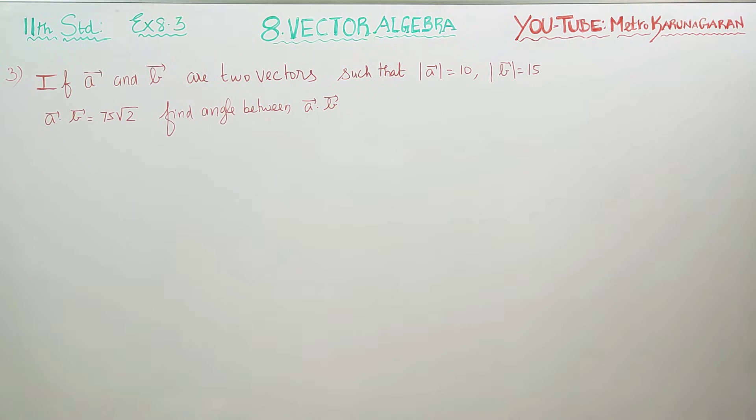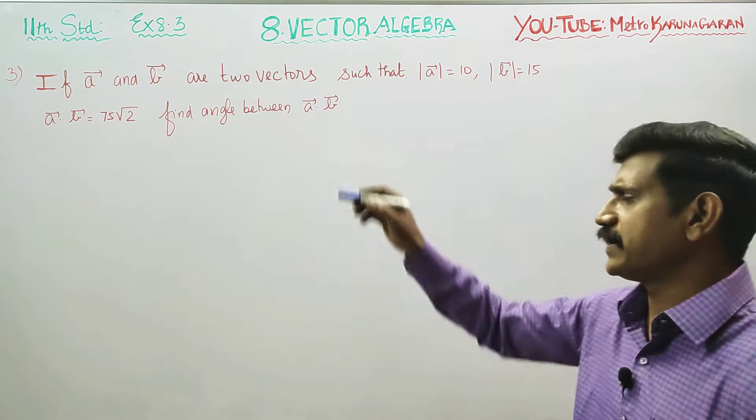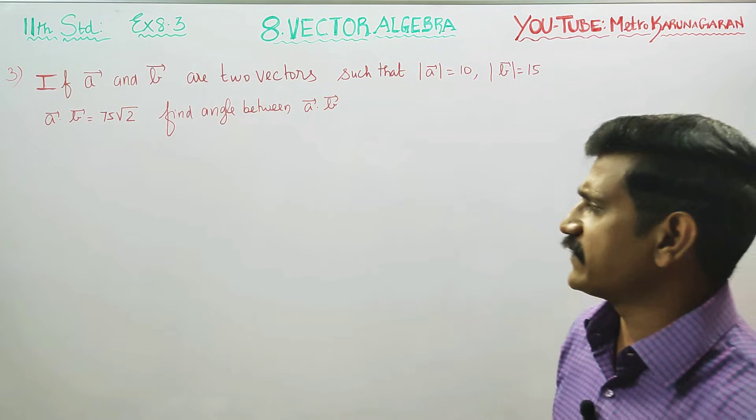Dear Learn Standard students, in exercise 8.3, problem number 3: If A vector and B vector are two vectors such that the magnitude of A vector equals 10, magnitude of B vector equals 15, and A dot B equals 75√2,